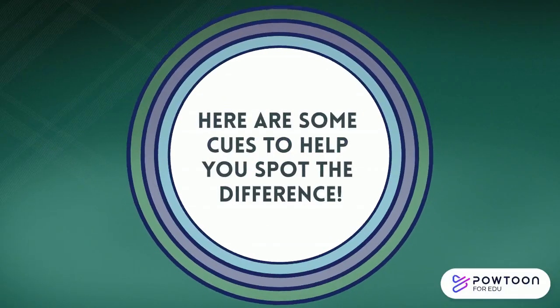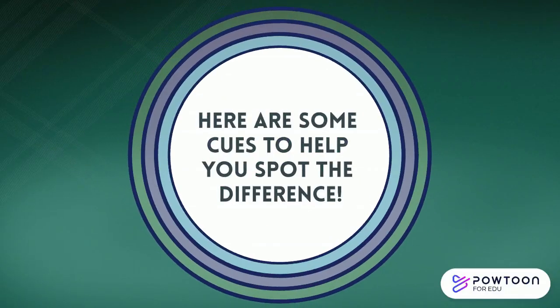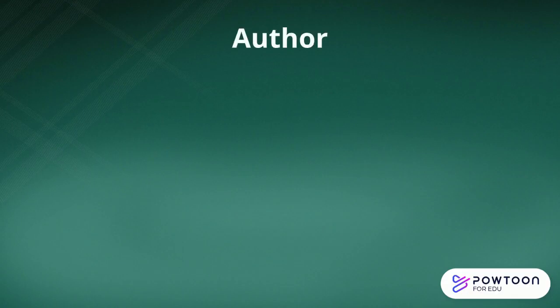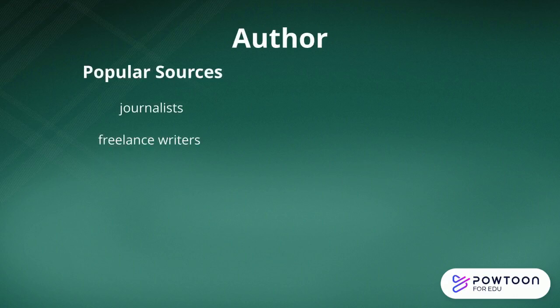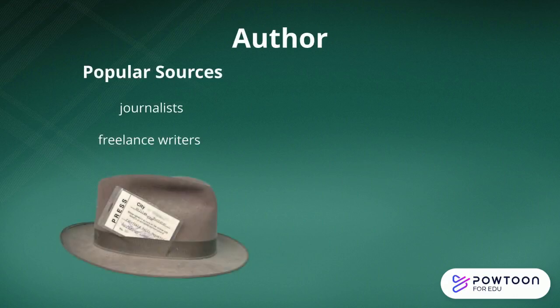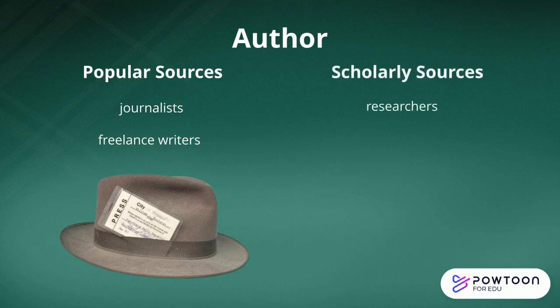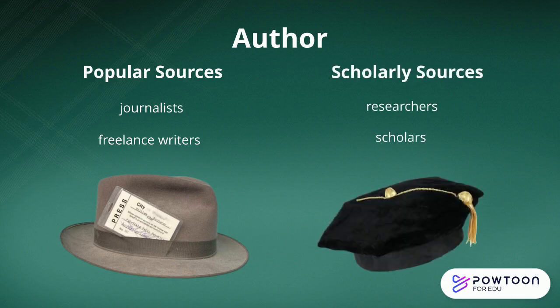Here are some cues to help you spot the difference between popular and scholarly articles. First, you want to look at who wrote the piece. Popular sources are usually written by journalists and other freelance writers who may not be specialists in the topics they are writing about. Scholarly sources are written by researchers and scholars — people like professors who are affiliated with academic or research institutions.